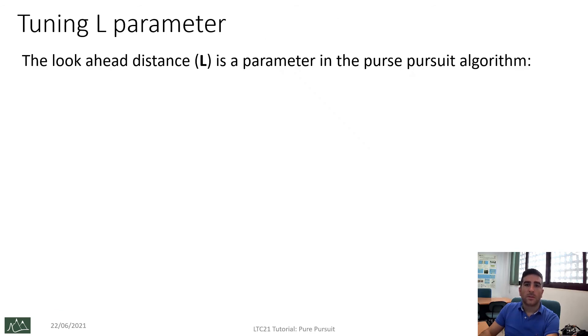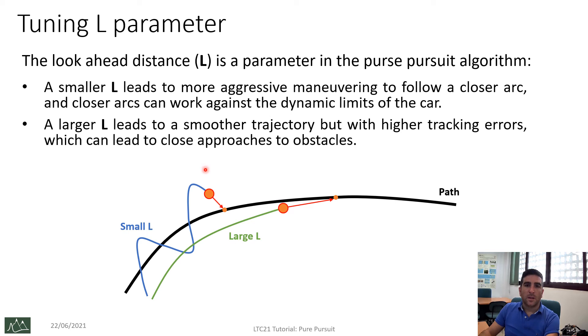As we mentioned before, the look-ahead distance is a parameter of this algorithm. In this figure, we can see an interpretation for a smaller value of L and large values of this parameter. A smaller L leads to more aggressive maneuvering to follow a closer arc, but closer arcs can work against the limits of car dynamics. On the other hand, a larger L leads to a smoother trajectory, but with higher tracking errors, which can lead to close approaches to obstacles.